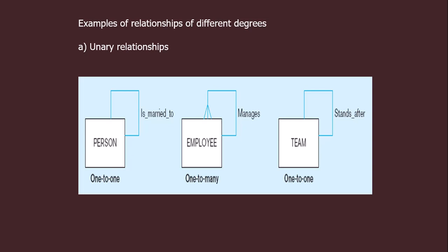A one-to-many example is employee — for example, an employee manages employees. This is one-to-many, or we can say for many employees there is one boss or one coordinator who manages these employees. So this is the example of one-to-many, and this is an example of one-to-one where a team manages the team.